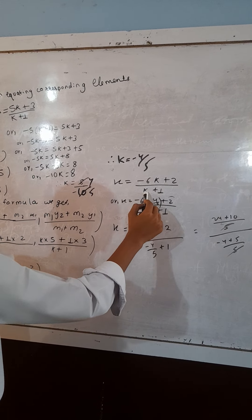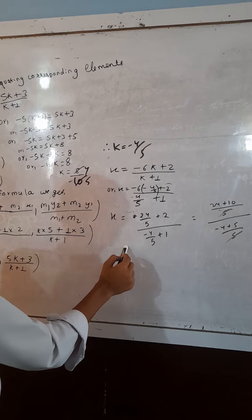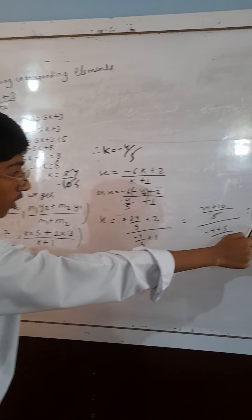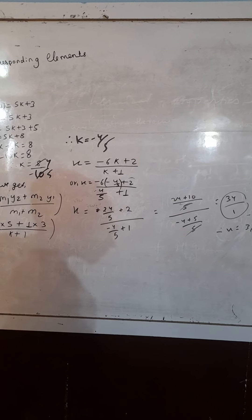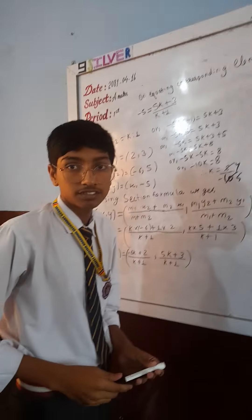On putting the value of K, X is equal to minus 6K plus 2. We get the value of X as 34. That means 34. Thank you.